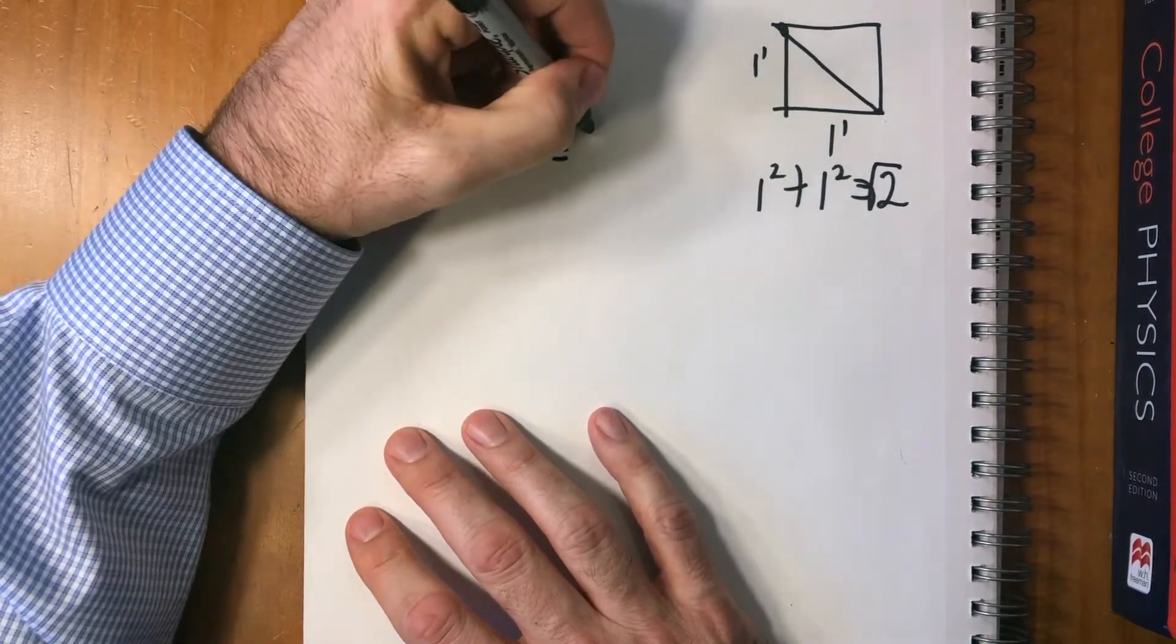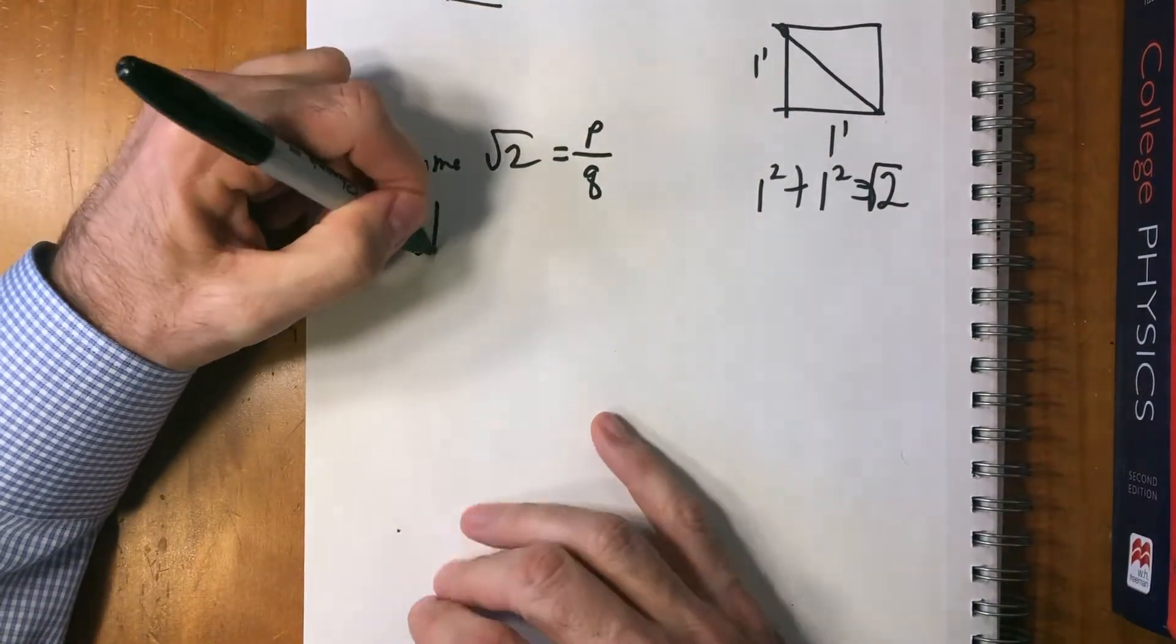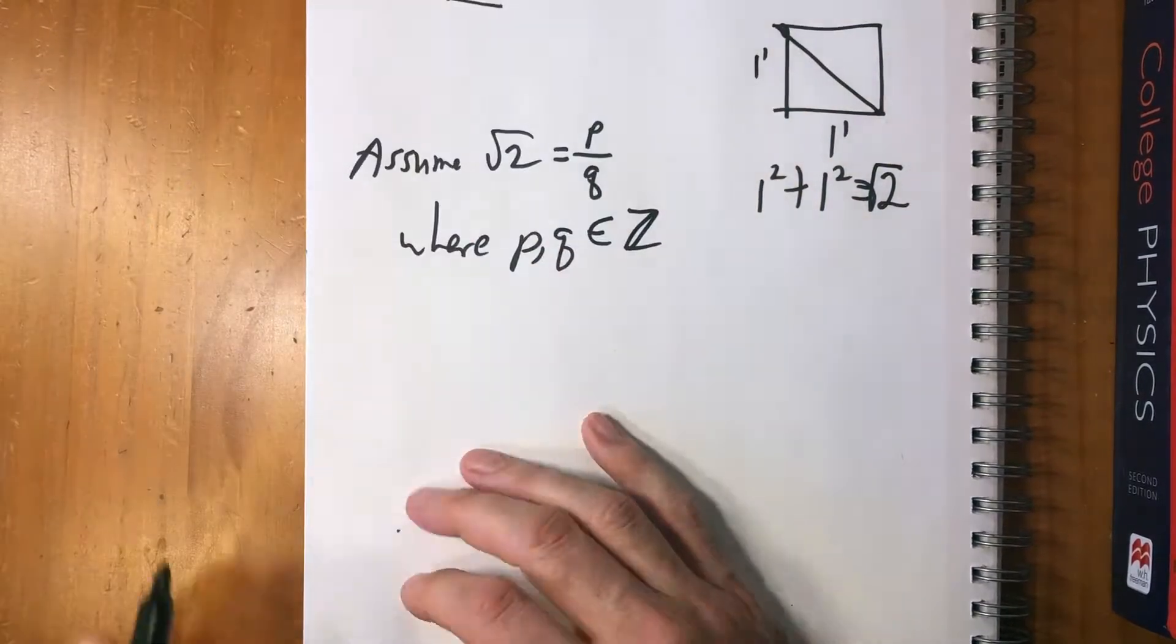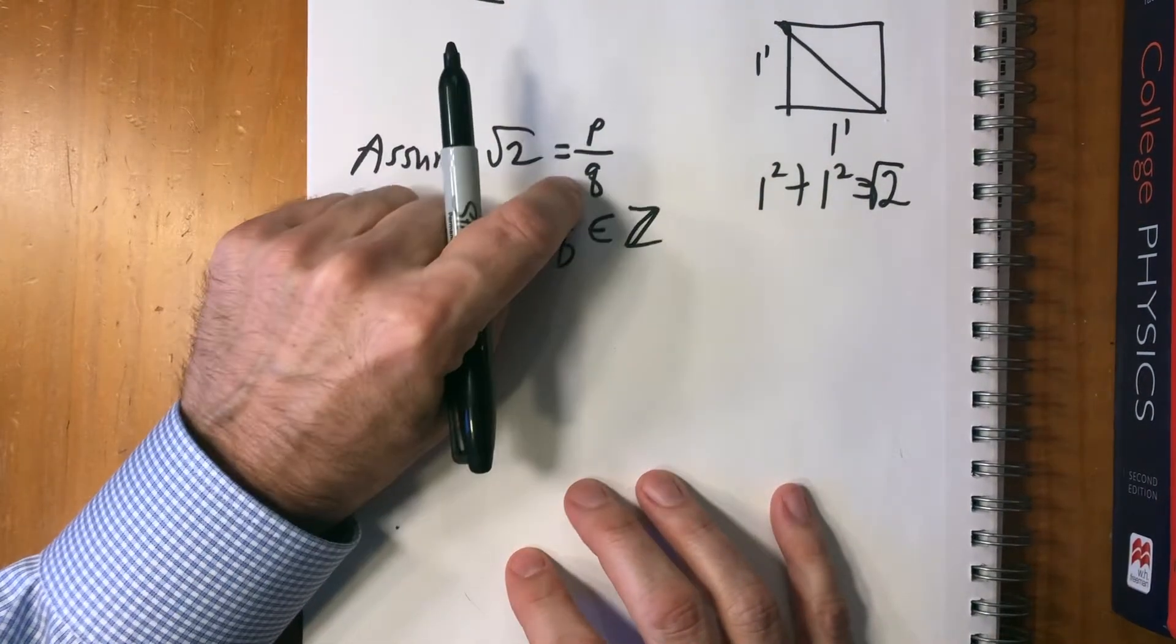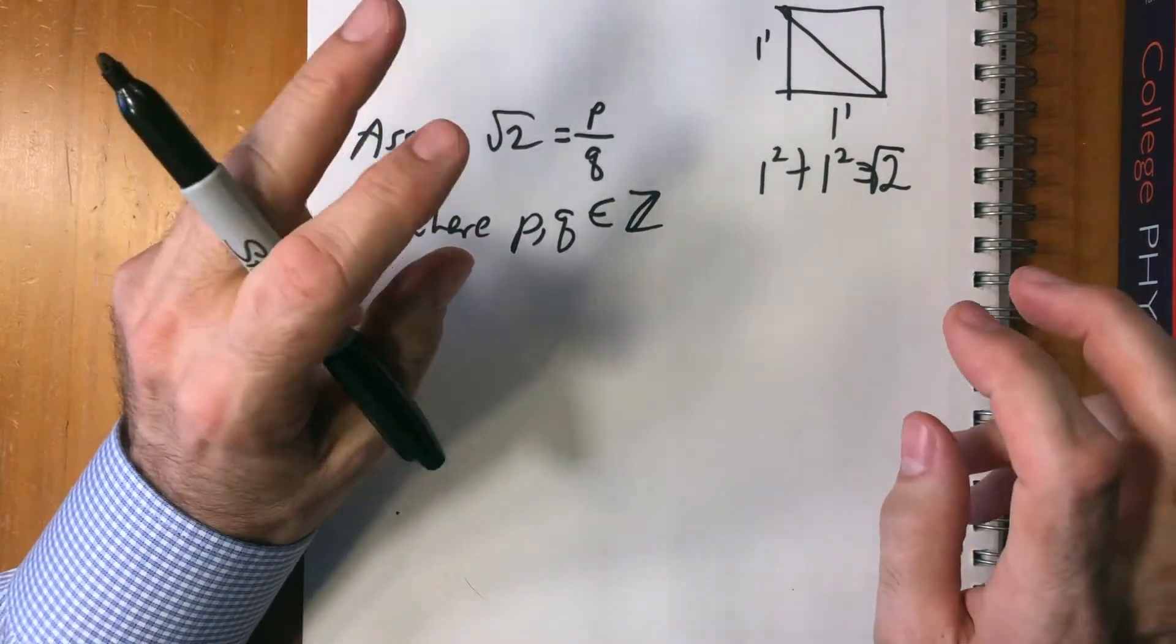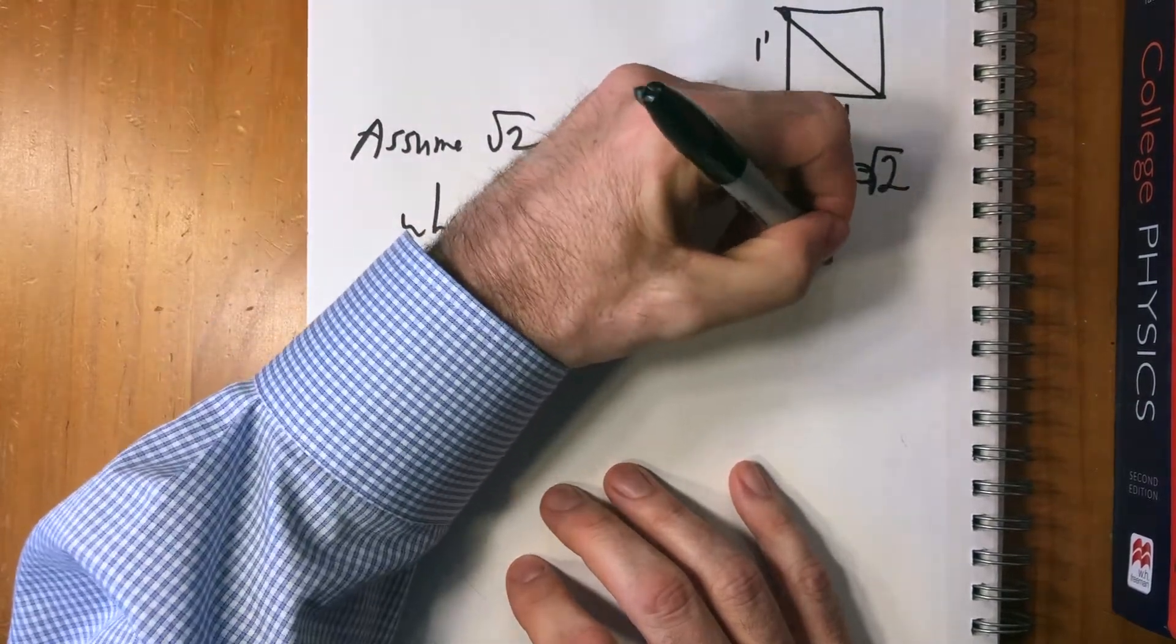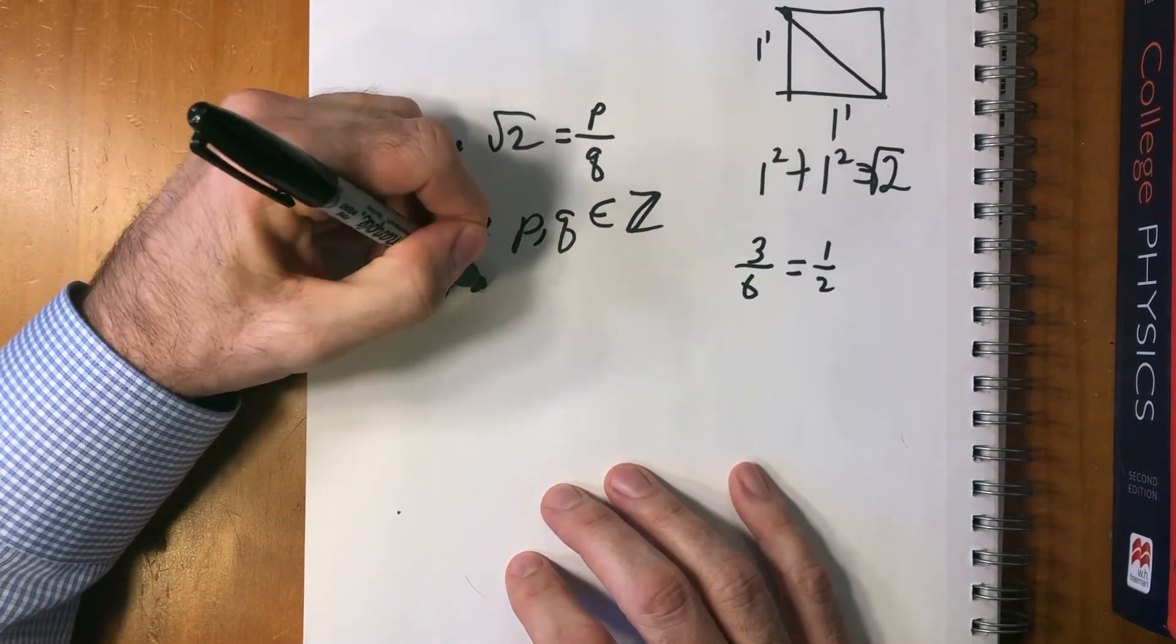We're going to assume this is rational. So let's say assume the square root of two equals some fraction p over q, where p and q are integers, and most importantly, that this fraction is canonical, or that it can't be reduced. In other words, p and q have no common factors.